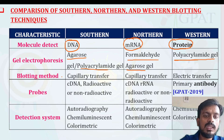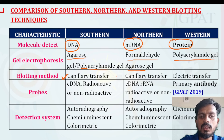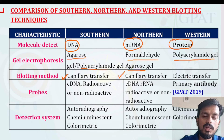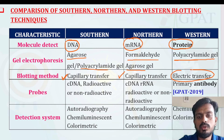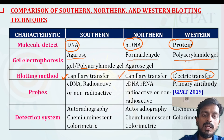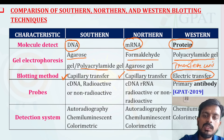For the blotting method, capillary transfer is used for southern blotting. For northern blotting, it is also capillary transfer. But for western blotting, electric transfer is used — a separate transfer unit is used with the help of which they basically perform the transfer.